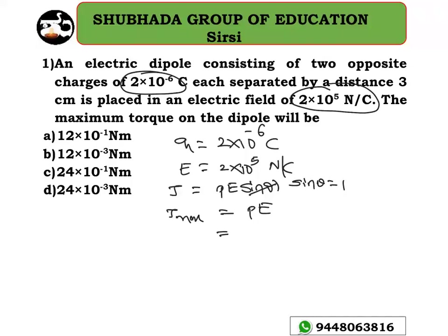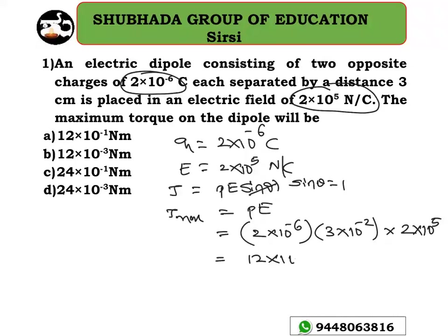The dipole moment P = charge × distance = 2 × 10⁻⁶ coulomb × 3 × 10⁻² meters. Multiplying by E = 2 × 10⁵, we get 6 × 12 × 10⁻⁸⁺⁵ = 12 × 10⁻³ Newton meters.